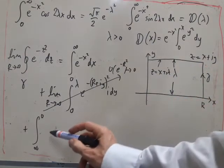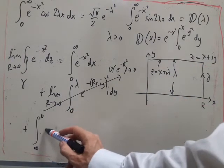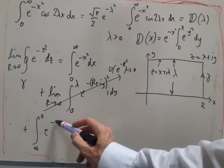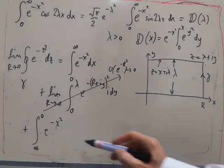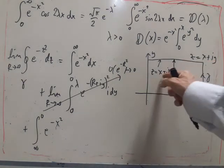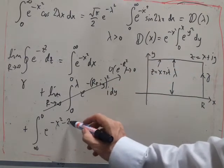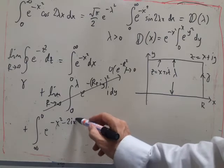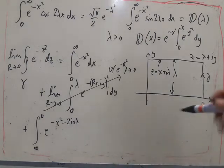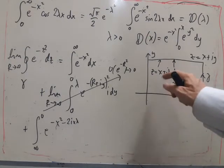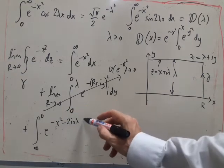So z equals x plus i lambda. So when we square it and do a minus sign, what do we end up with? So we end up with minus x squared minus 2 i x lambda. And then this squared gives us, with a minus sign, plus lambda squared.